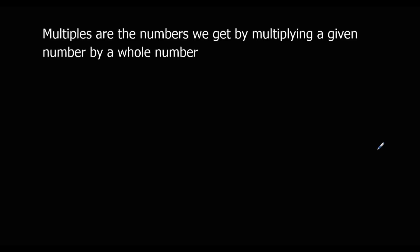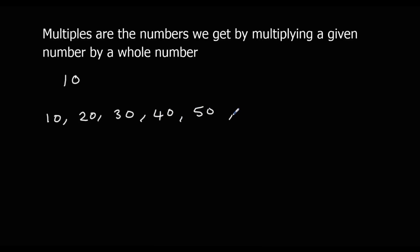Multiples are numbers we get by multiplying a given number with another whole number. Really, all this means is the numbers in its times table. So if I want the multiples of 10, the multiples of 10 are 10, 20, 30, 40, 50, 60 and so on — the 10 times table.